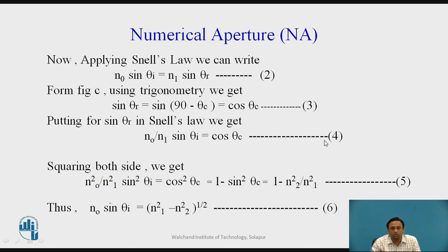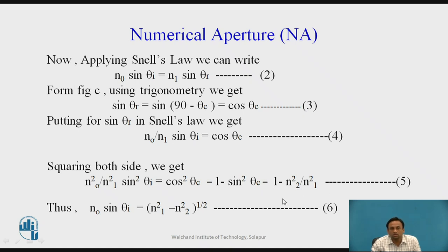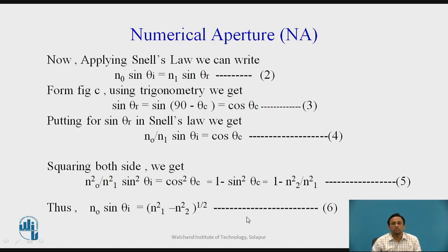Squaring both sides: (n0² / n1²) × sin²(θi) = cos²(θc) = 1 − sin²(θc). The critical angle is given by θc = sin⁻¹(n2 / n1), so sin²(θc) = n2² / n1². Substituting: (n0² / n1²) × sin²(θi) = 1 − (n2² / n1²). Therefore, n0 × sin(θi) = √(n1² − n2²), which is equation 6.